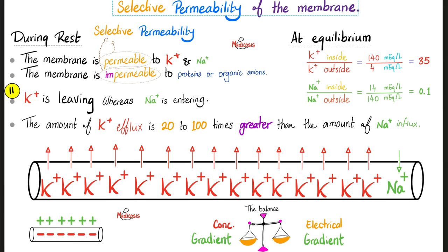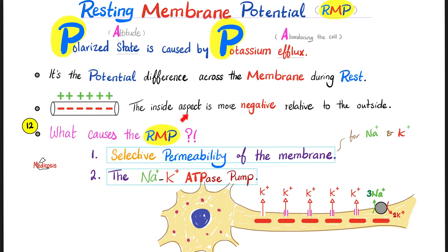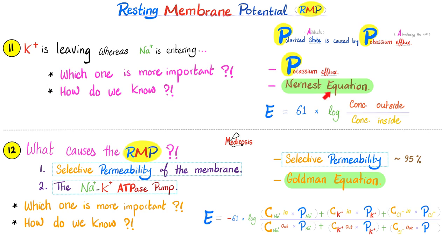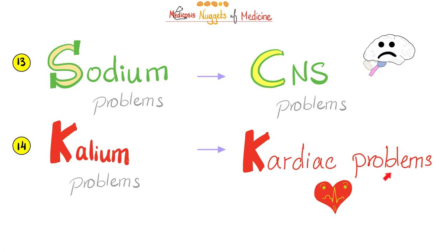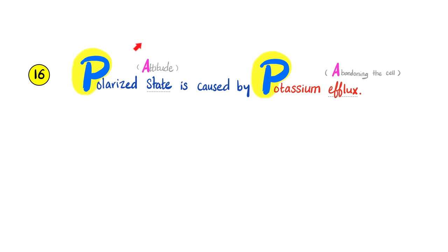During rest, the inside is negative. Selective permeability. During rest, the membrane is more permeable to potassium compared to sodium. What are the causes of the resting membrane potential? The selective permeability and the ATPase pump. The Nernst equation told us that the potassium efflux is way more important than the sodium influx during rest. The Goldman equation told us that the selective permeability is more important than the sodium potassium ATPase pump when it comes to the resting membrane potential. Sodium problems, CNS problems. Potassium problems, cardiac problems.